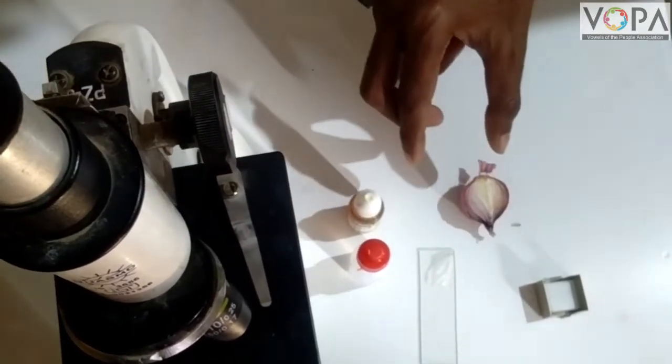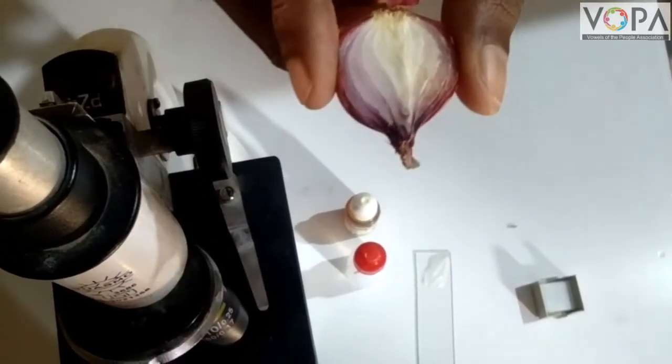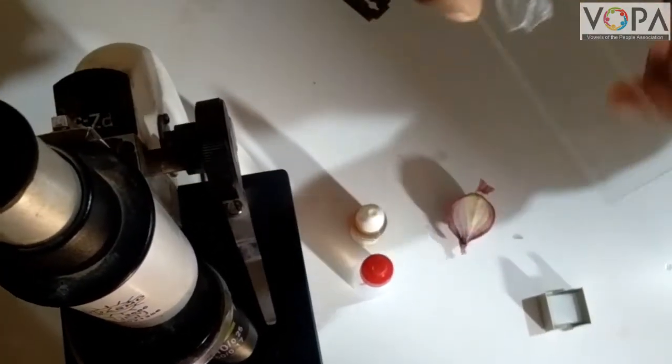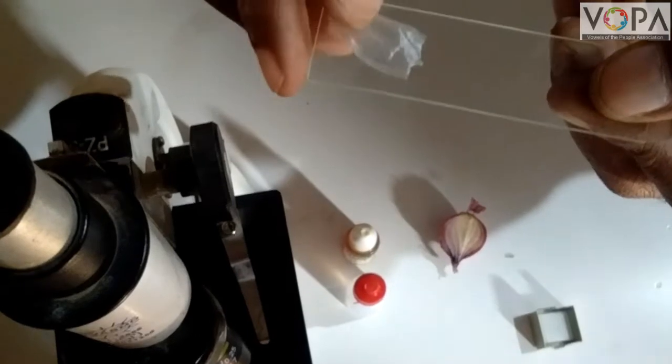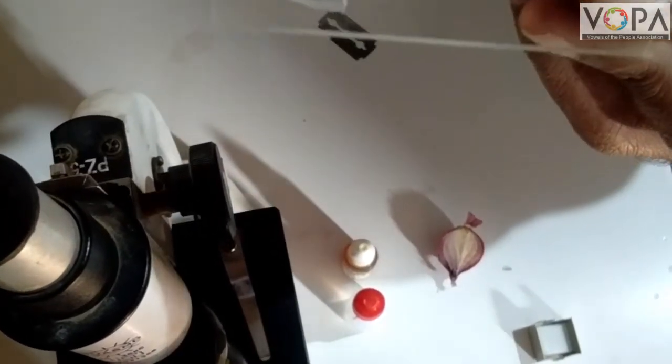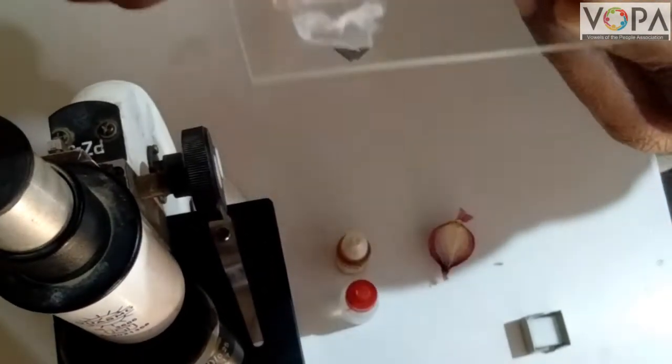First, we have to take a piece of segment of onion and carefully separate the thin skin from its concave surface with the help of forceps. This is the purpose of our skin and our skin.